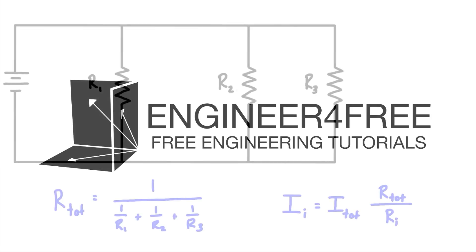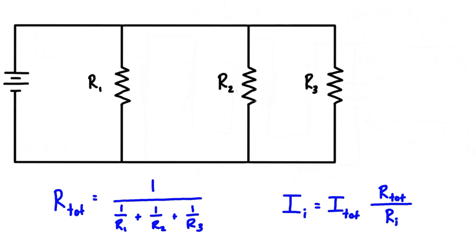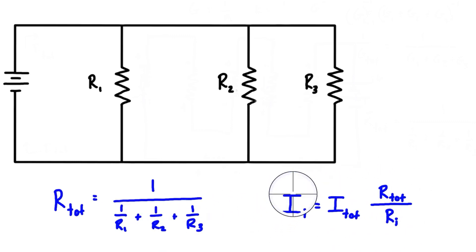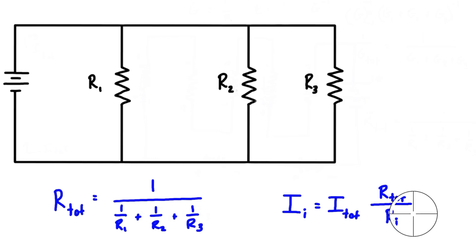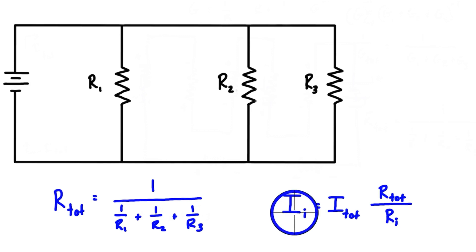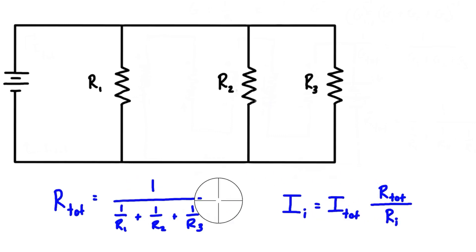Welcome back. In this video I just want to go over quickly how current division works and what the formulas are for it. This is when we have a simple parallel circuit — just a bunch of parallel resistors connected to a power source. You might be familiar with these expressions where the total resistance is equal to 1 over the sum of the inverses of each resistor, and also the expression where the current through any particular resistor equals the total current times the total resistance divided by that individual resistance.